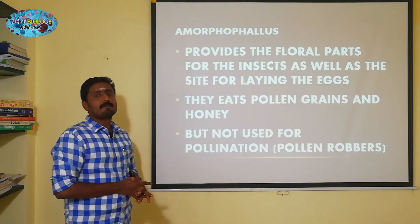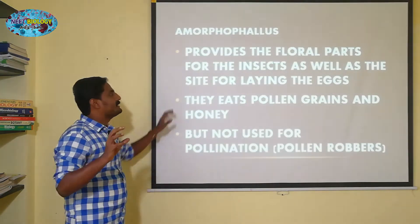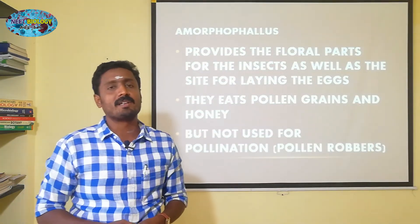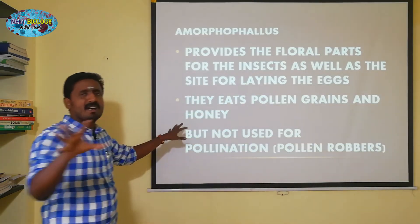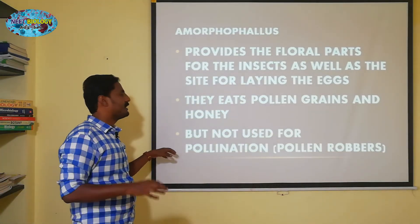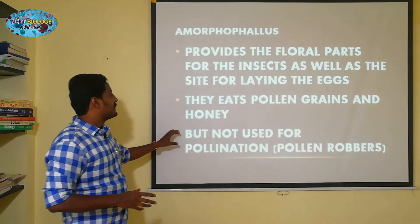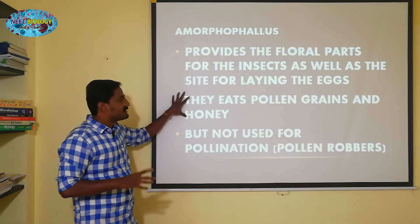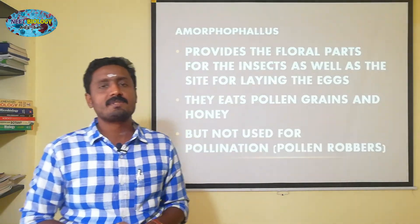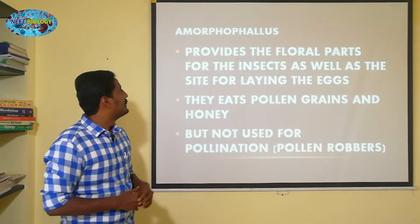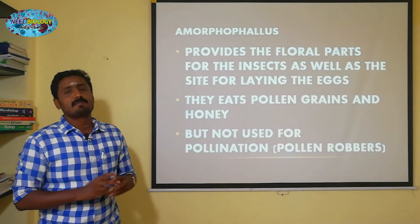In this plant, if you develop a larva, you will eat all the pollen grains and all the honey. But this is not used for pollination — if you eat the pollen grains, that's why I call it the pollen robbers. It's called the Amorphophallus interaction, where an insect is robbering the property of the Amorphophallus.